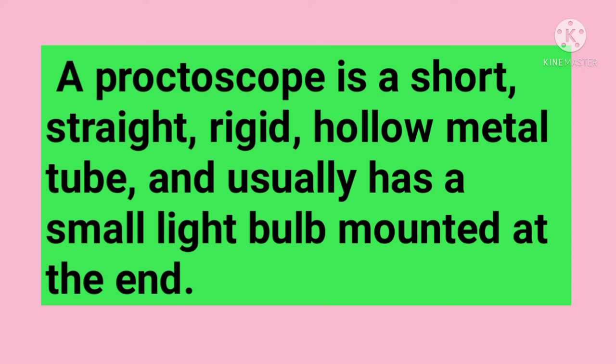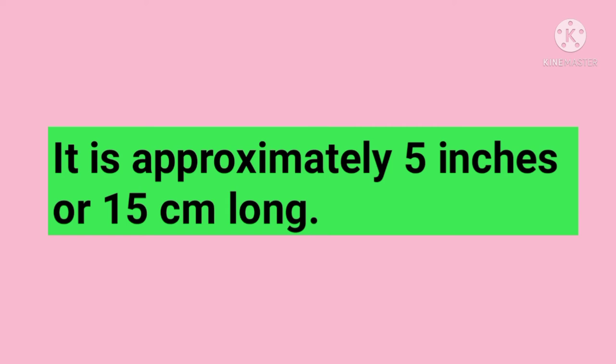Proctoscope is a short, straight, rigid hollow metal tube and usually has a small light bulb mounted at the end. Proctoscope is approximately 5 inches or 15 cm long.